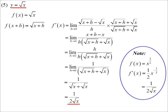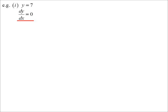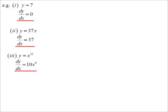That is going to save us a lot of time. If y = 7, the derivative is zero — constant always gives zero. y = 37x, the derivative is 37, the coefficient of x. y = x^10, we get that number, put it to the front and subtract one: 10x^9.